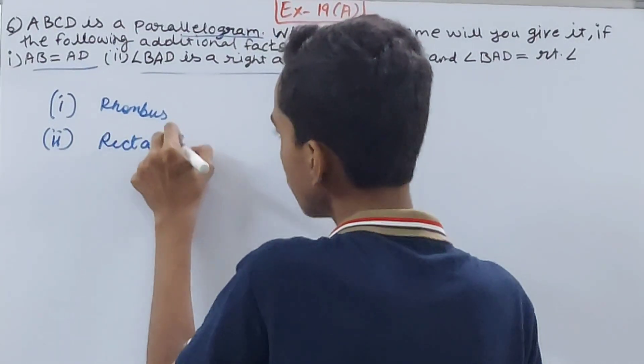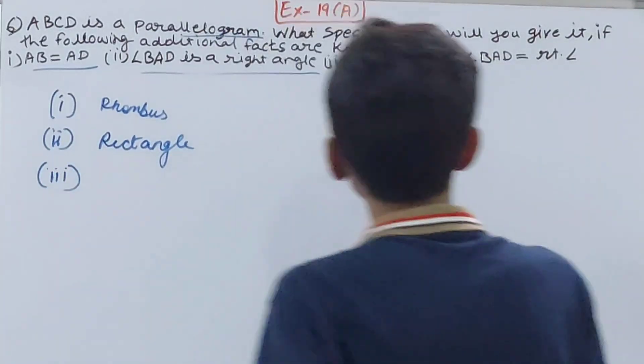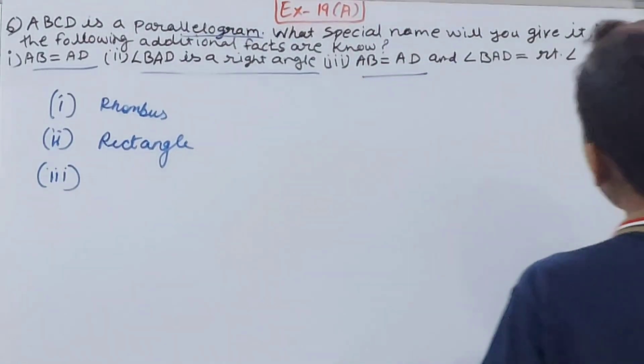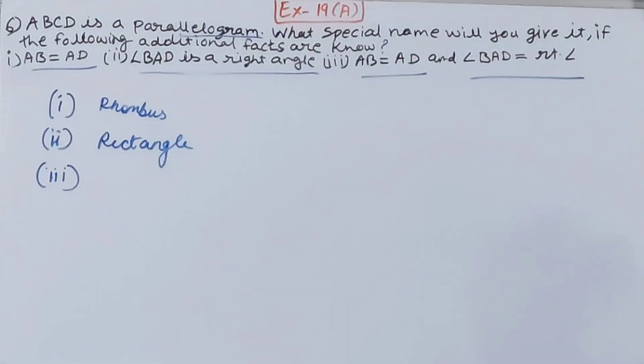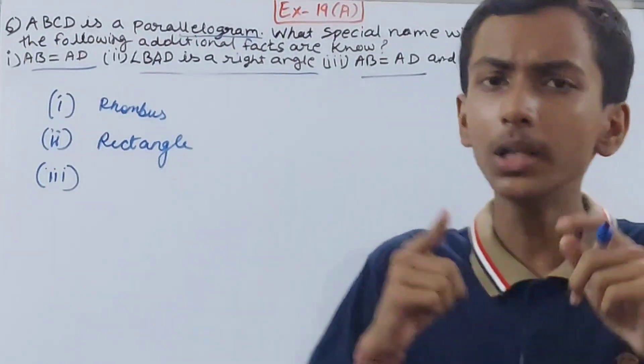And third, the final one says what? AB equals to AD, angle BAD equals to right angle. Now I told you before also, in a square all the four sides are equal and all the angles are of 90 degrees.